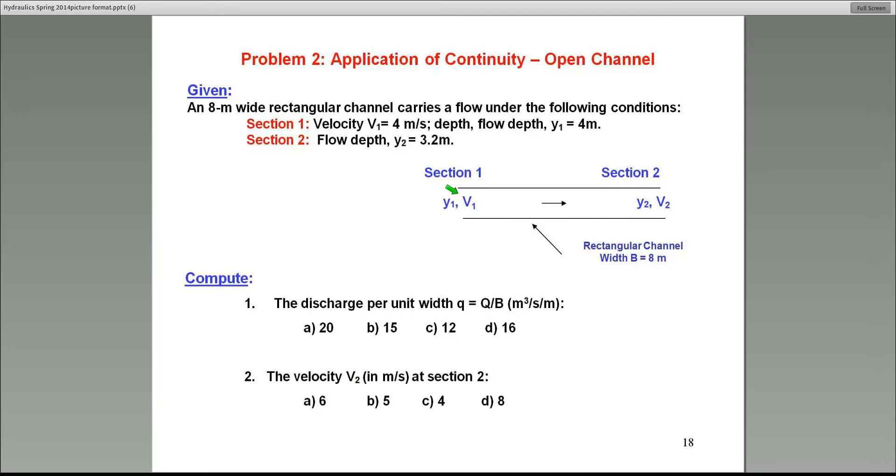So in this case, at Section 1, I have a velocity of 4 meters per second, a depth of 4 meters. Remember, V1 times A1 should give you really the Q. But in this case, what I've given you is a rectangular channel with a flow depth of 4 meters. And the width of the rectangular channel is also given here. It's 8 meters wide. So the flow area for a 4 meter depth would be 4 times, that's the depth times the width, which in this case is 32 square meters. So therefore, you can take that area, multiply by velocity to get the total discharge.